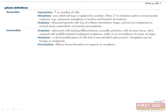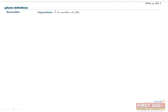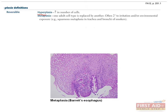All the words that end in -plasia can be pretty confusing. There are only a few things you need to remember. The first term, hyperplasia, means that cell number is increasing — hyper means more, like hyperkalemia means more potassium. Remember that this is different from hypertrophy, which is when cells increase in size but not number. The second term, metaplasia, means there is a change from one normal cell type to another — meta means change, like metamorphosis. One common example is Barrett's esophagus, where the normal cell type of the esophagus, stratified squamous epithelium, is replaced by columnar epithelium. This is often triggered by some exposure or irritation — in the case of Barrett's, it's chronic exposure to gastric acid.